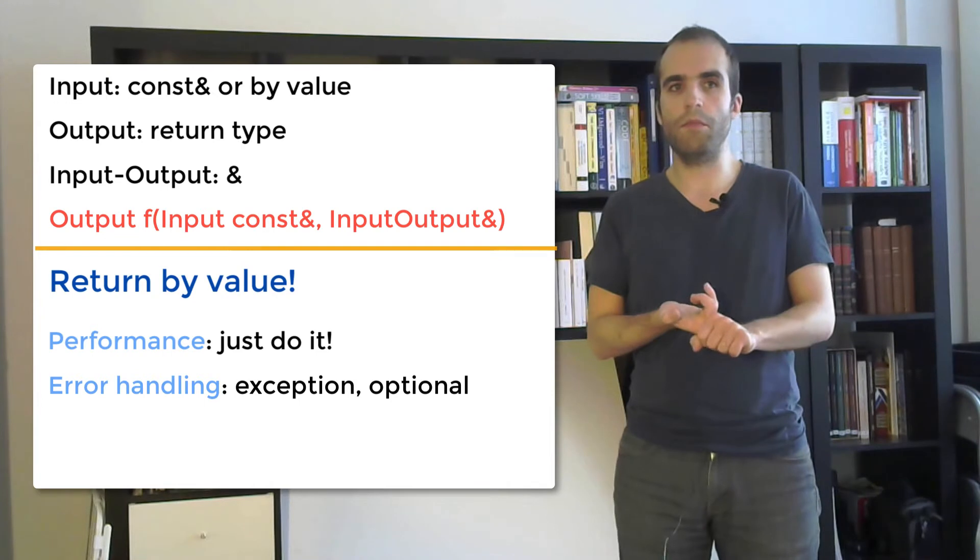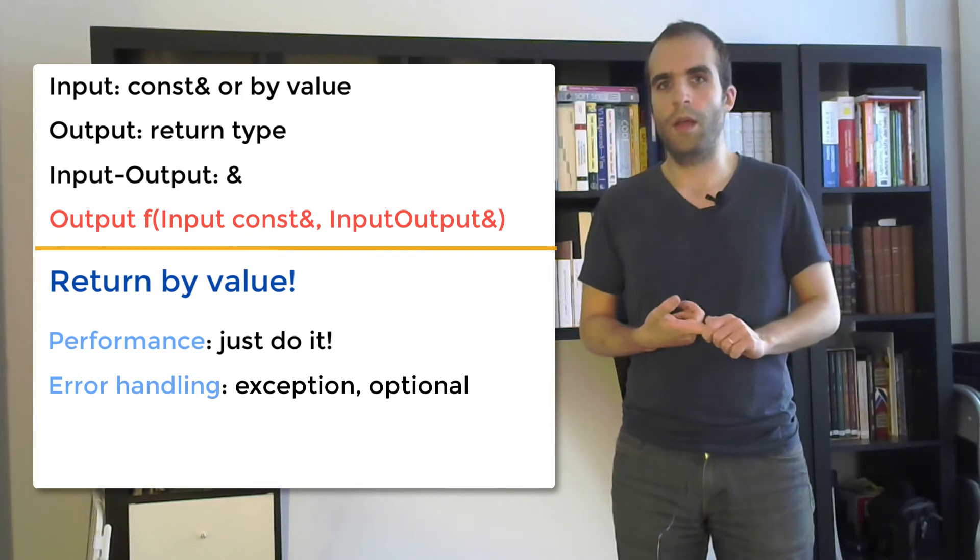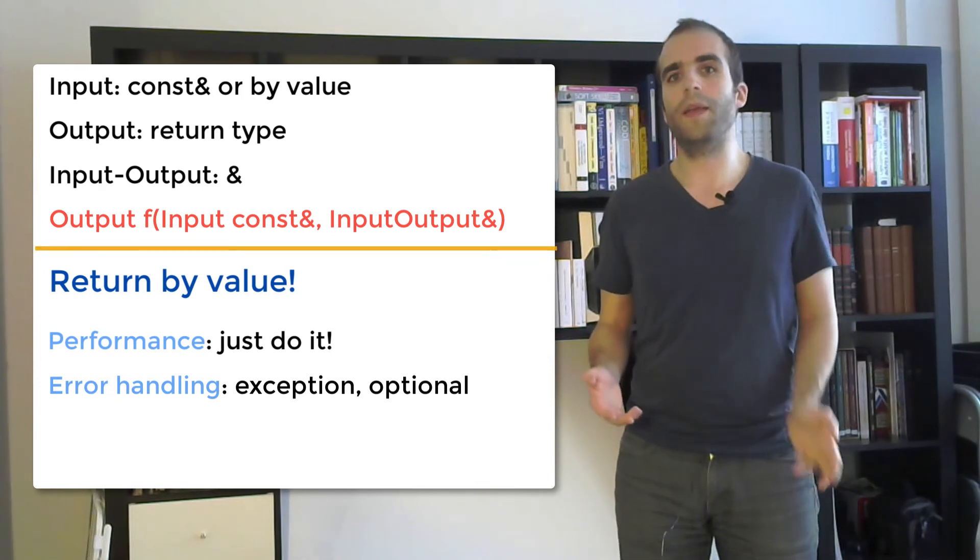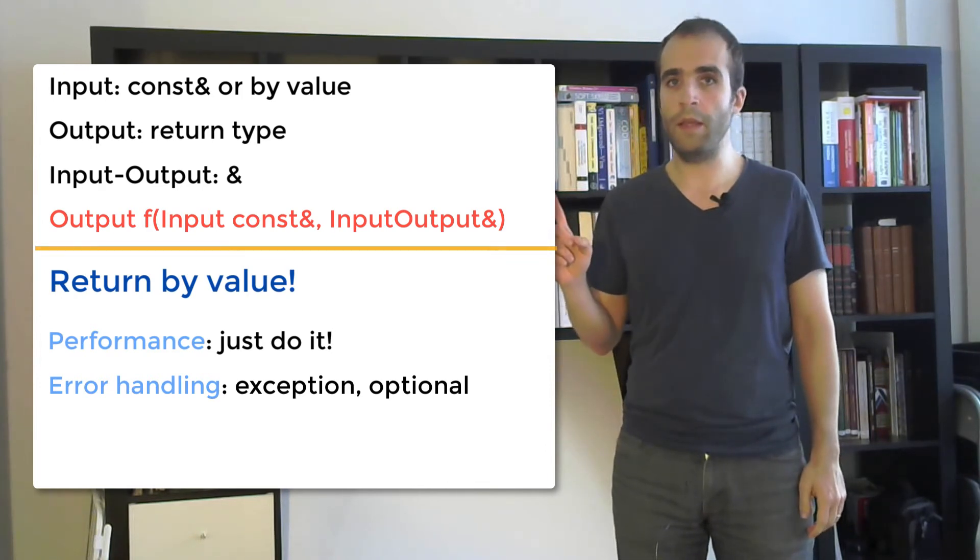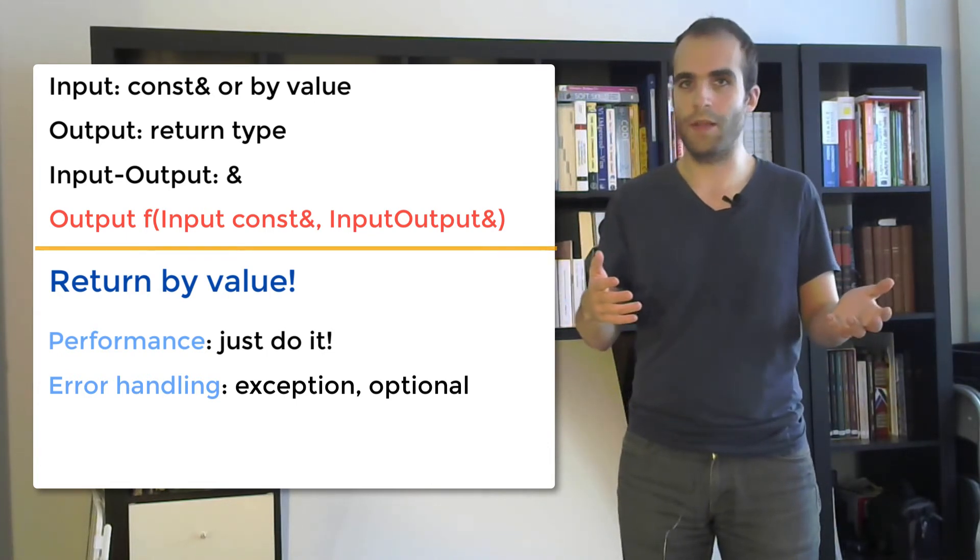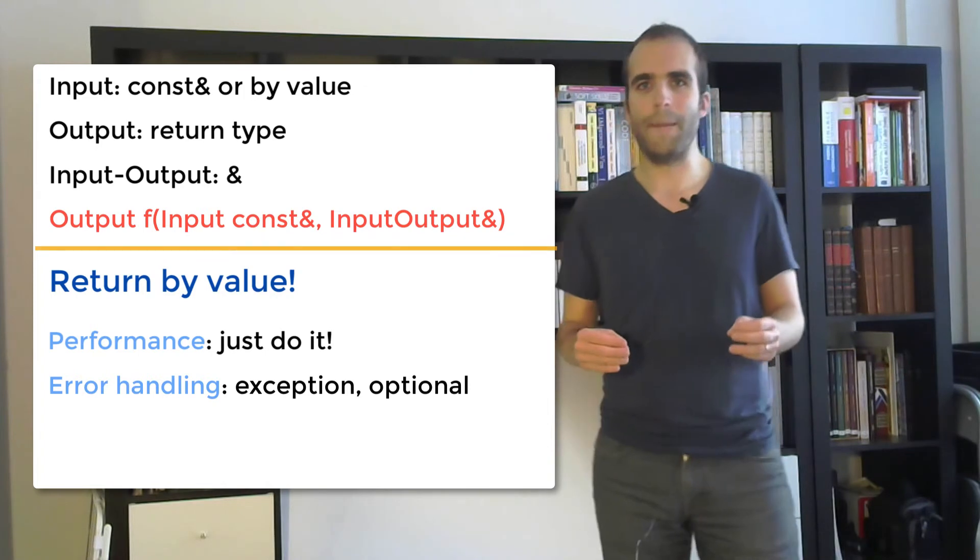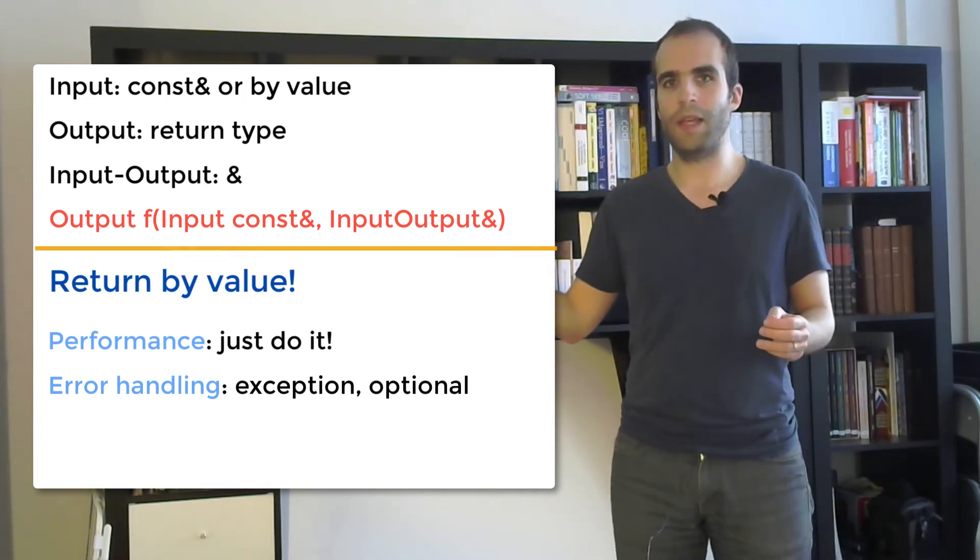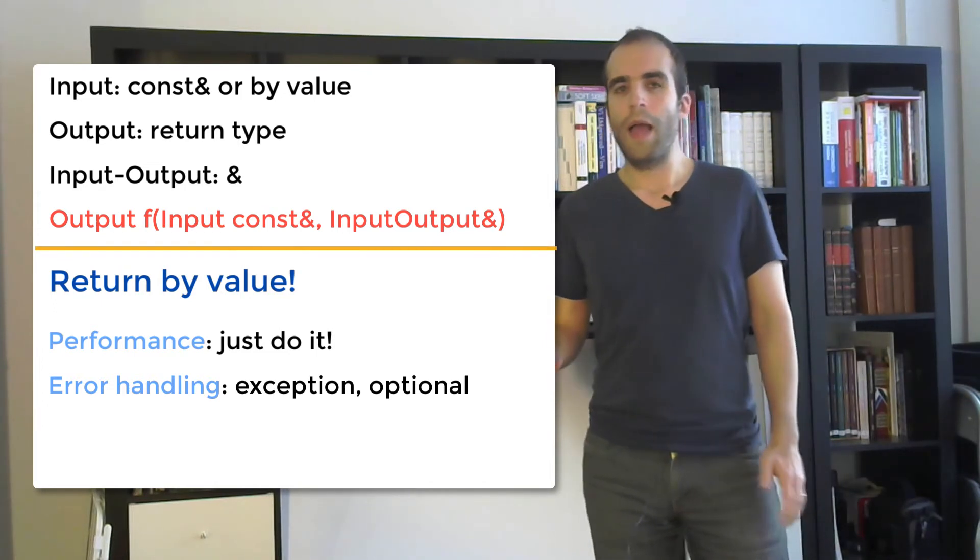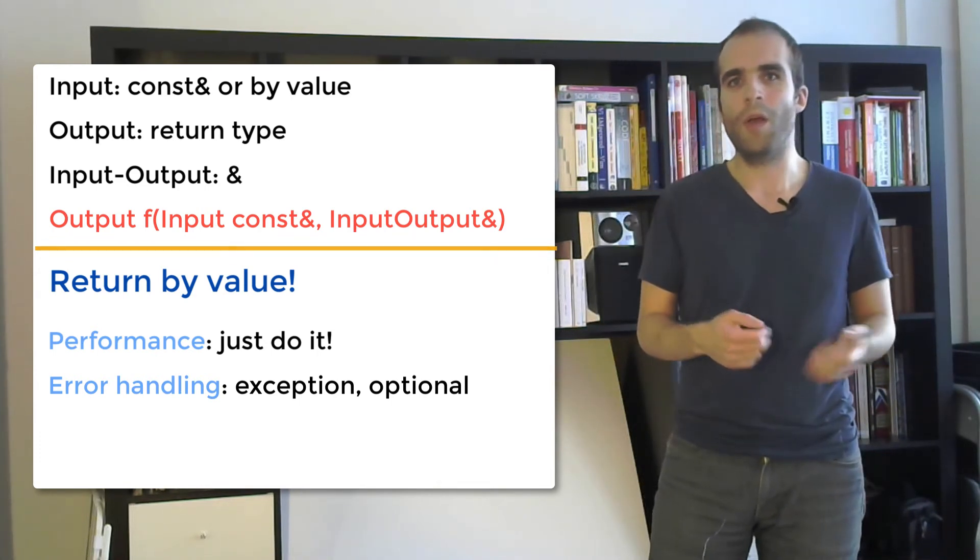So we've seen so far performance, error handling which are reasons that prevent us from returning by value and there's another one which is returning several things at the same time. So in C++ we can only return one thing at a time. So how do we do to return several things out of a function?